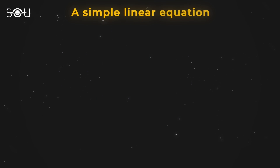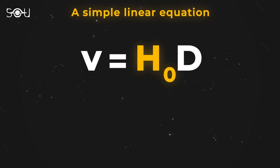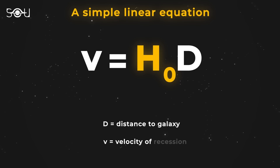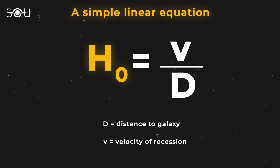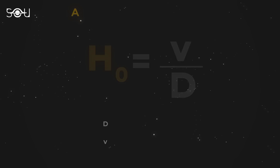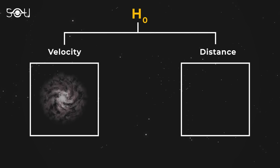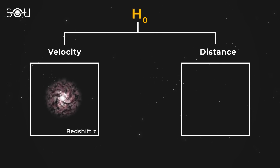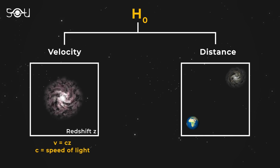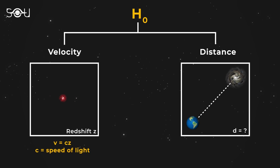You must be wondering where the problem is — it's a simple linear equation. All we have to do is measure the distance to a galaxy D and its velocity of recession V, plug in the values, and we have our Hubble constant. Calculating how fast a galaxy is moving away is easy; all we need is its redshift. However, measuring the distance has always been a problem. How do we accurately measure the distance to a galaxy that's millions of light-years away?